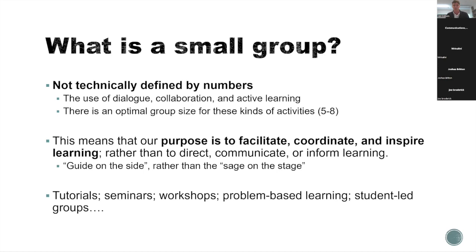There is an optimal group size for these activities — some say ideally between five and eight, though I prefer smaller groups. Seminars will vary in size from week to week; you might have rooms of 25, you might have rooms of five. The smallest group I've dealt with is one, and as any experienced lecturer will tell you, the only thing worse than nobody turning up is one person turning up. What we're supposed to do with small groups is facilitate learning, coordinate learning, and inspire students' independent approach to the subject matter.